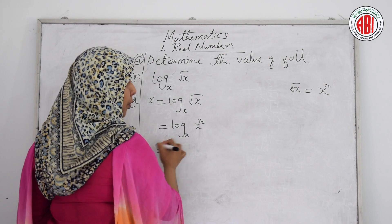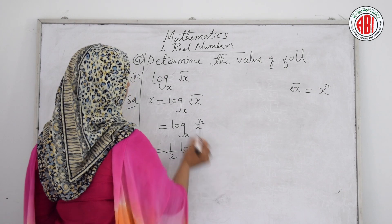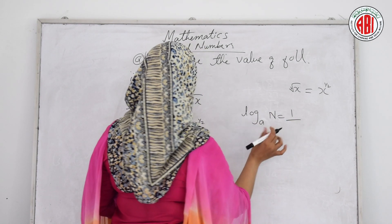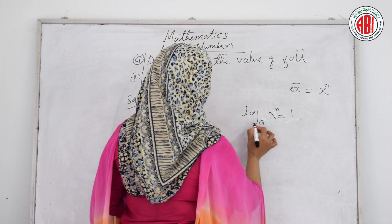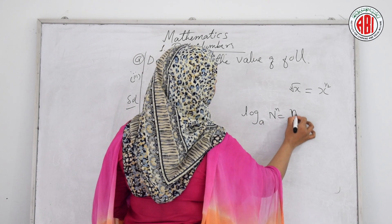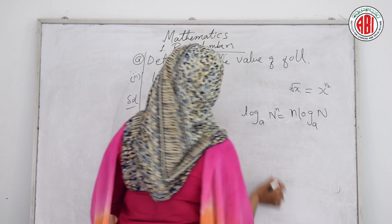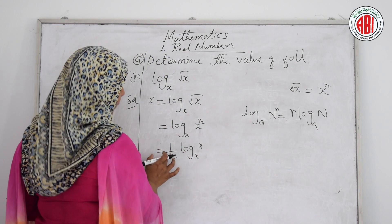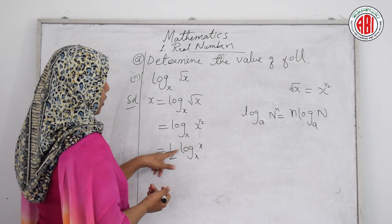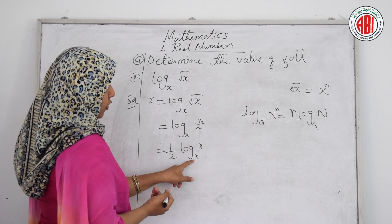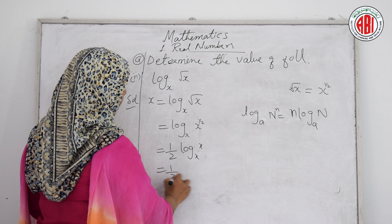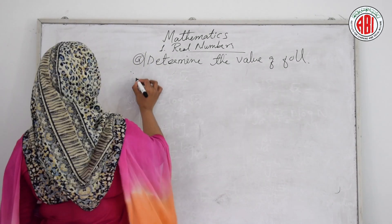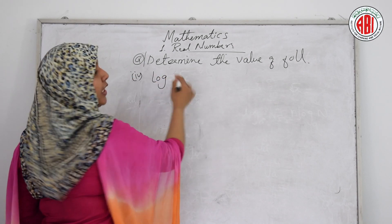Using the property log_a(x^n) = n·log_a(x), the exponent 1/2 shifts out: (1/2)·log_x(x). Since base and argument are both x, log_x(x) = 1. So the answer is 1/2 times 1 = 1/2.